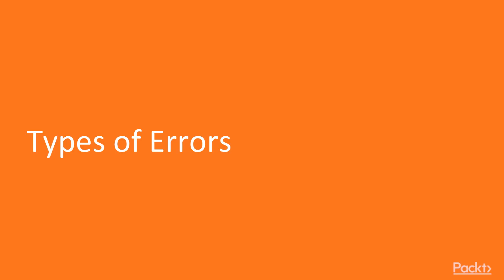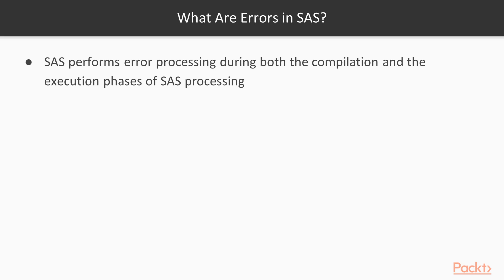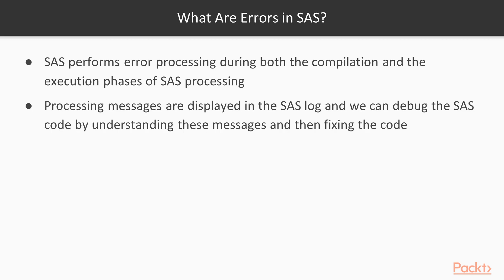SAS performs error processing during both the compilation and the execution phases of SAS programming. Processing messages are displayed in the SAS log. In the SAS console we have a SAS log tab where all processing messages are displayed, and we can debug the SAS code by understanding these messages and then fixing the code.